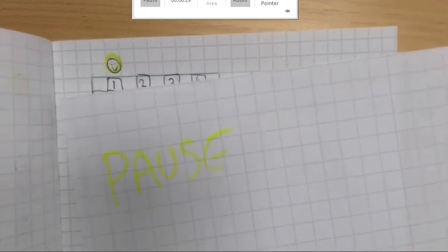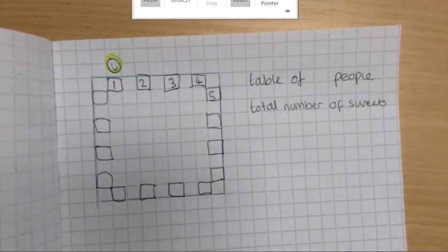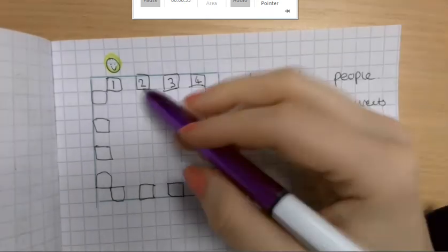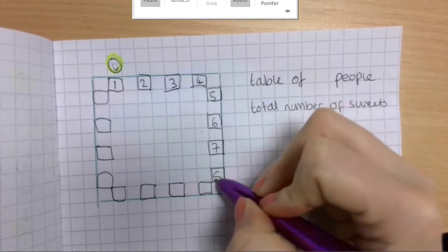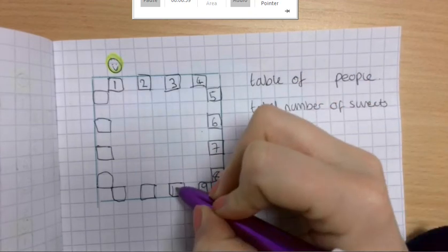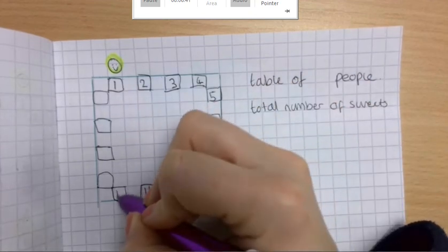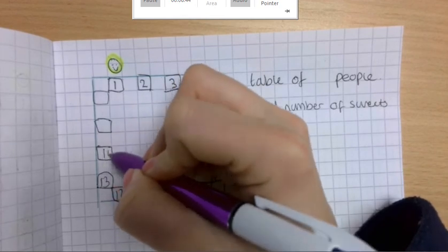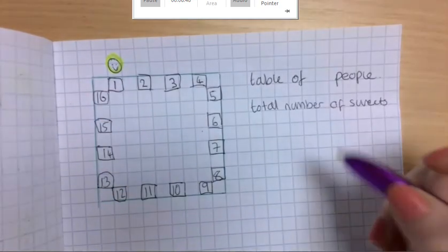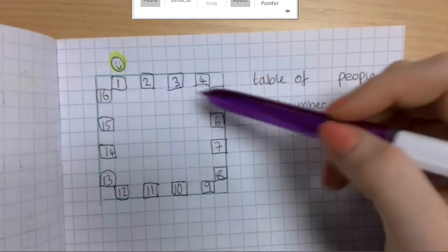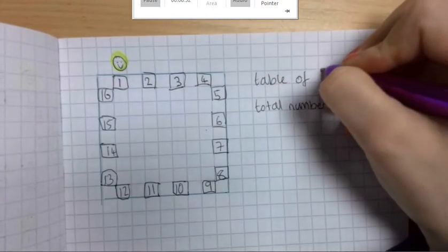Okay, hopefully you did pause that and have a go at filling in this table. So let's go through it and check that we've got the same thing. So 1, 2, 3, 4, 5, 6, 7, 8, 9, 10, 11, 12, 13, 14, 15, 16. So how many people are there? Well, there's 16 people.